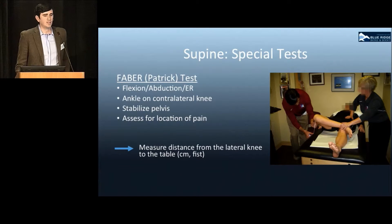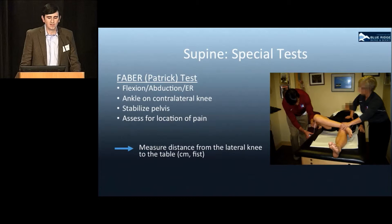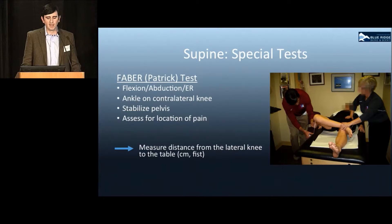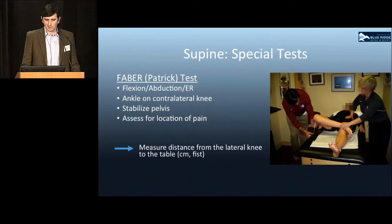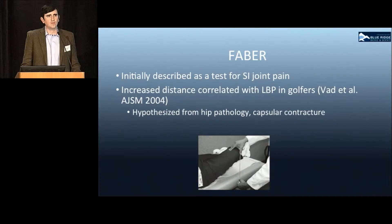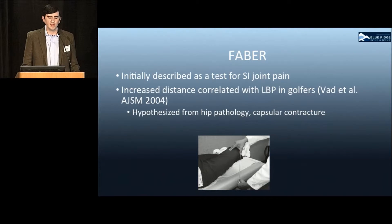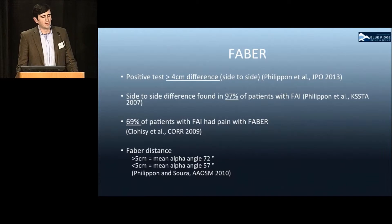The FABER, or Patrick test, is a figure-of-four type test with the pelvis stabilized. The patient is asked to report any pain, and the distance from the lateral knee to the table is measured in centimeters or fist-widths. This was initially a test for SI joint and posterior pain, but increased distance was found to correlate with lower back pain in professional golfers, with authors hypothesizing this may be due to hip pathology and capsular contracture.